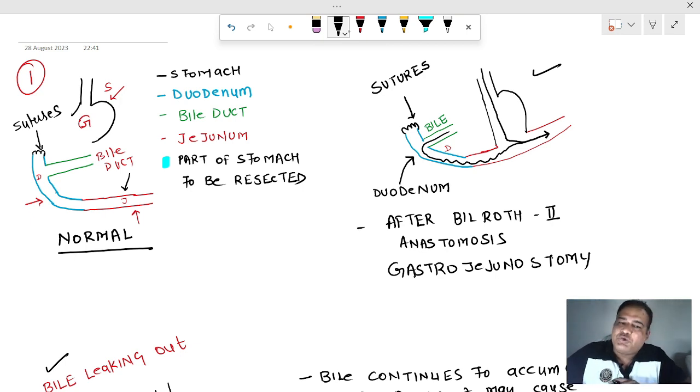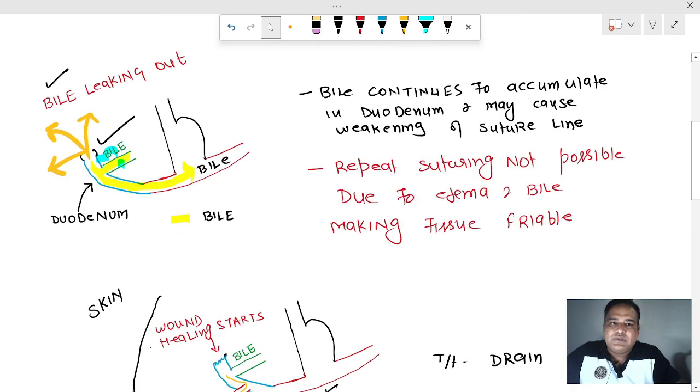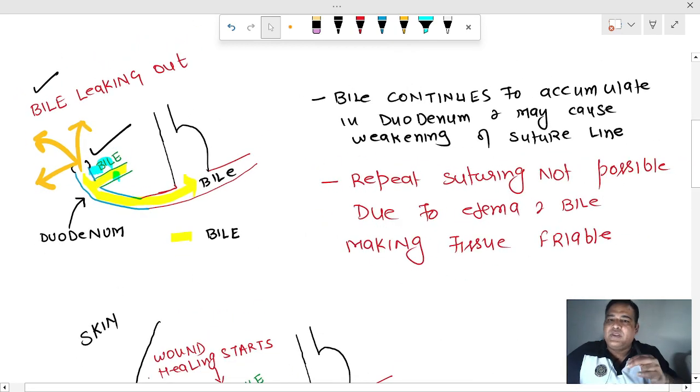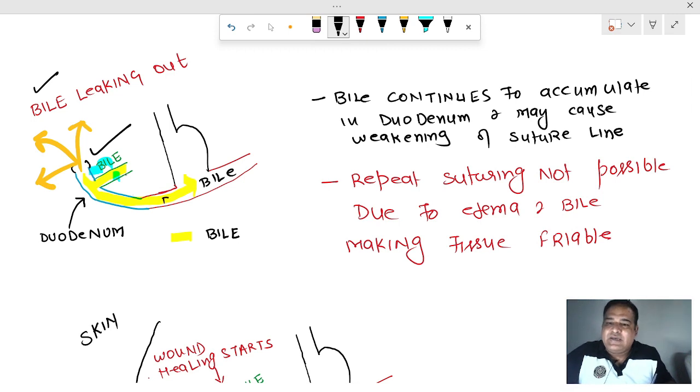But let us say there is obstruction to the flow of bile due to poor technique. What will happen in that case? Suppose the bile does not go forward. It will keep on accumulating in the duodenum, and at one point, the pressure inside the duodenum will be so high that duodenum will rupture. Where will it rupture? Where you have applied the sutures, and the bile will start leaking out.